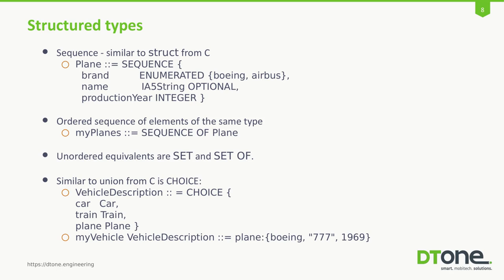My plane can be a sequence of plane. There is something slightly confusing here: the sequence is the struct piece, whereas sequence of is a different type, which is sort of like an array of those sequences. If you don't care about the order, you can use sets. Set of is like an unordered sequence of.